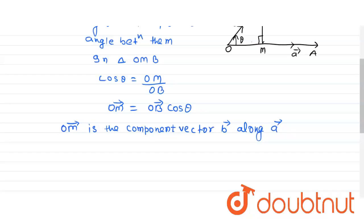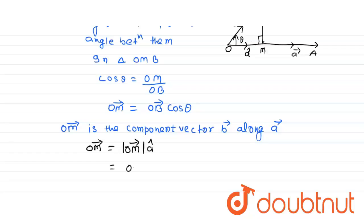So, OM vector can be written as: magnitude of OM into the direction of OM. The direction of OM will be A cap. So the magnitude of OM is the magnitude of OB vector into cos theta, multiplied by A cap.